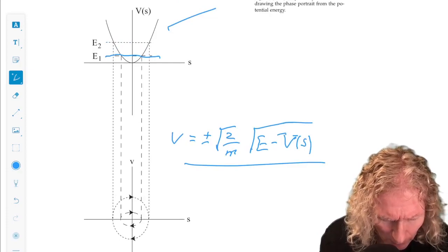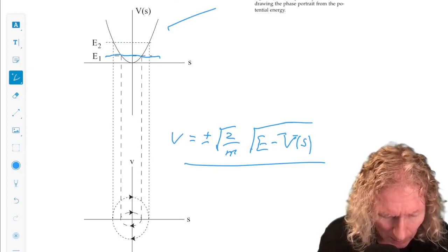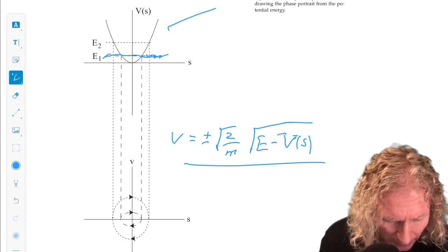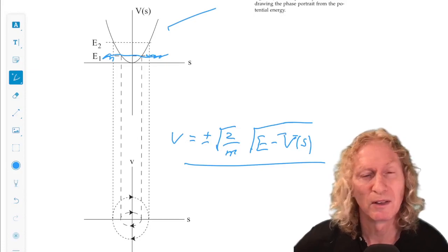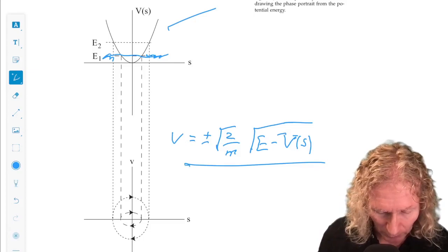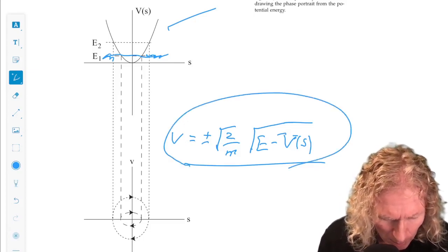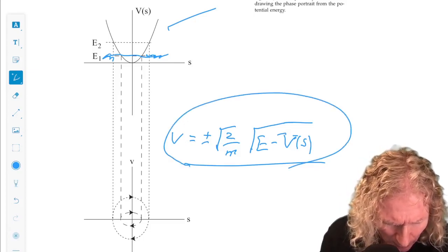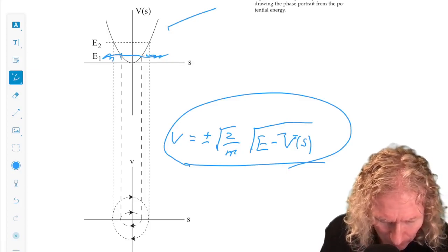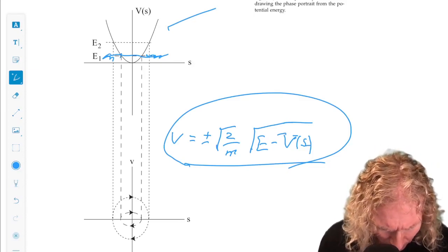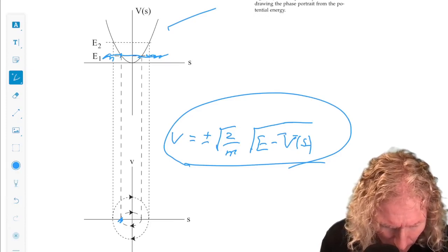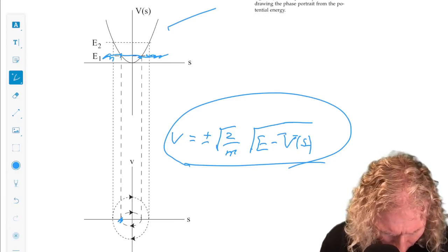So for this particular value of E, s to the right and s to the left, E minus V(s) is negative. And so there's no solution to this curve. But for this value of s where E1 equals the potential energy, E equals V(s). So v is zero. Similarly, for this point over here, v is zero.